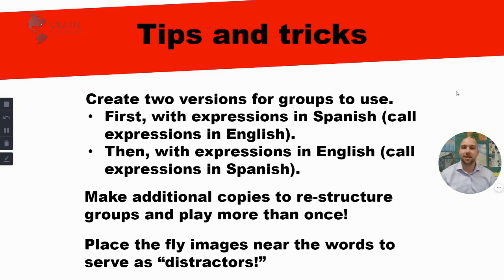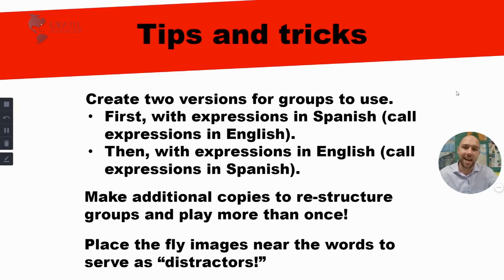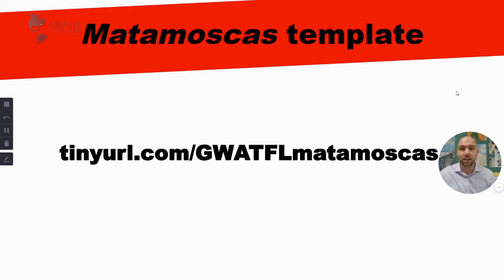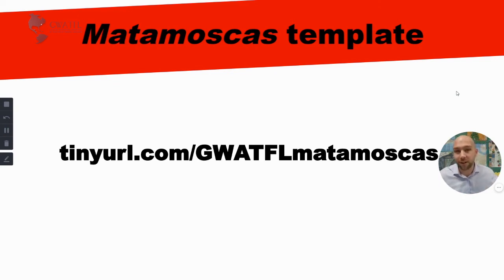The last tip: those fly images - the closer you put them to the word, the more of a distractor they create, making it harder for students to click quickly. It's just an extra level that makes it a little more fun. You can access this Matamoskas template at tinyurl.com/GuatfulMatamoskas. Make a copy of it so it goes into your Google Drive and then follow the instructions. Thanks, enjoy.